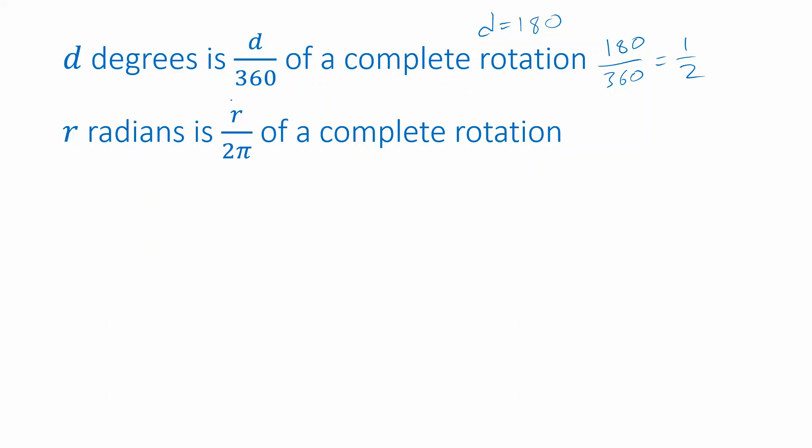Similarly, if there are 2π radians in a complete rotation and we have r radians, let's say we plug in π for r—so imagine we've turned around π radians. If I plug that into this expression, π over 2π, that also simplifies to one half. And so this is telling us that π radians and 180 degrees both represent the same thing. They both represent half of a complete rotation.